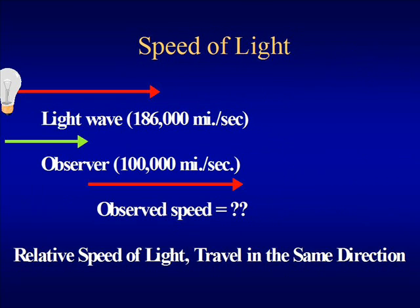In the instance of light, we find that physics is literally turned on its head. Here we have the instance where a light wave represented by the top red arrow is traveling at light's known speed of 186,000 miles per second.